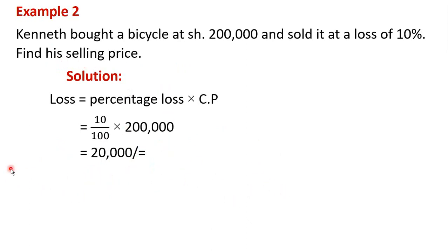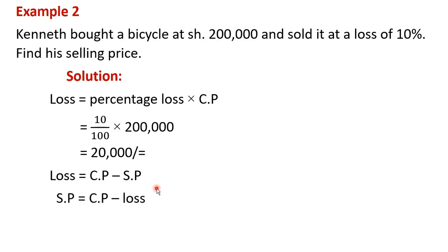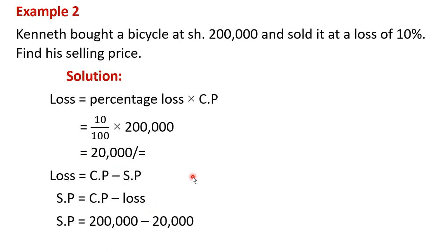We have got the loss but we are looking for the selling price. Remember, loss is equal to the cost price minus the selling price. We have the cost price as 200,000 shillings and the loss as 20,000 shillings. Making the selling price the subject, selling price is equal to the cost price minus the loss, which is 200,000 minus 20,000, giving us 180,000 shillings. That is our second example.